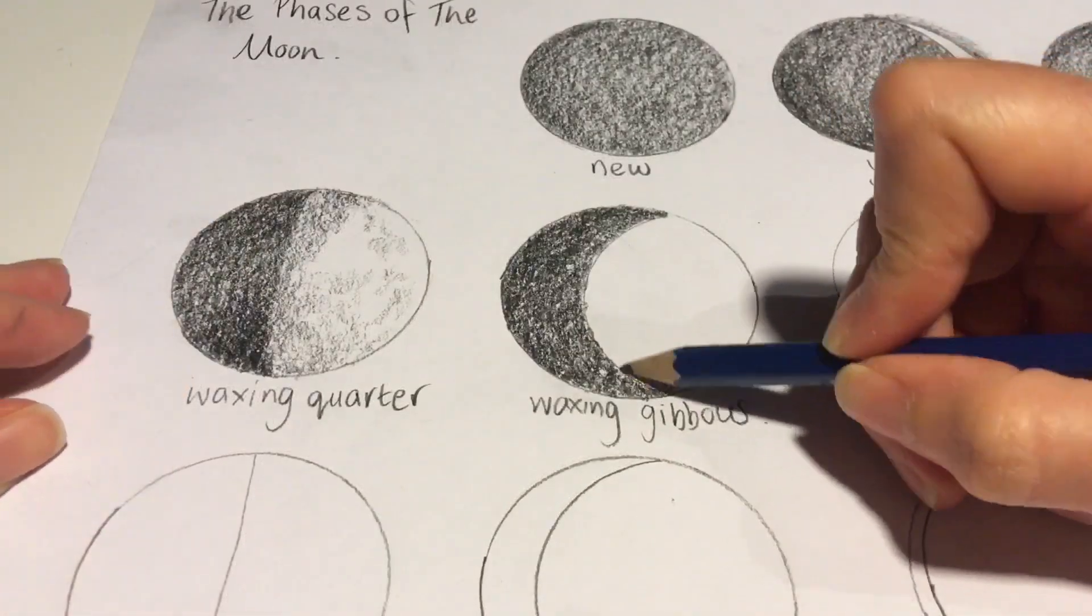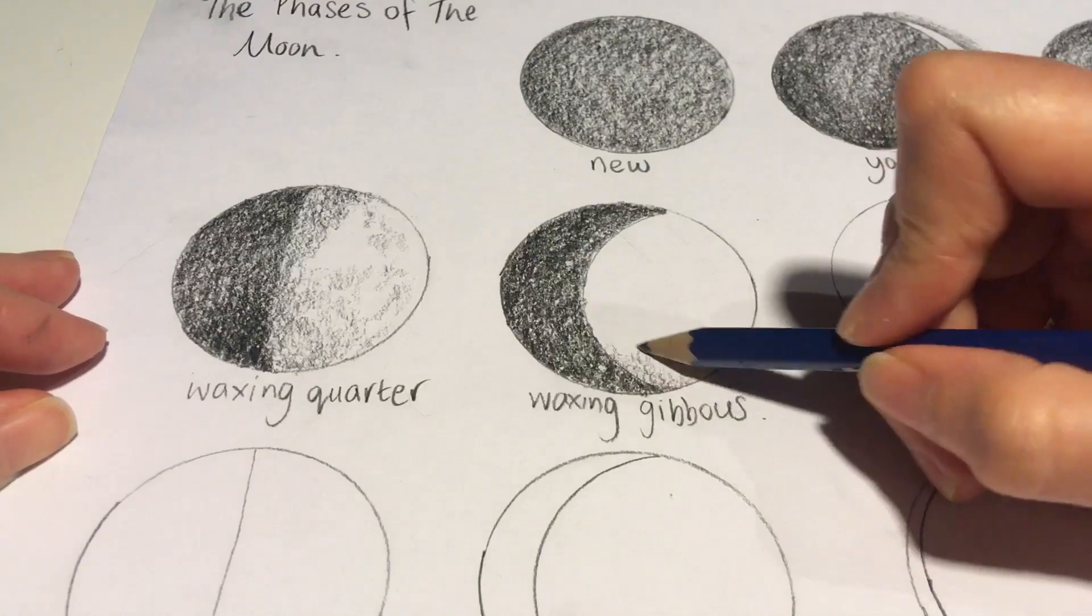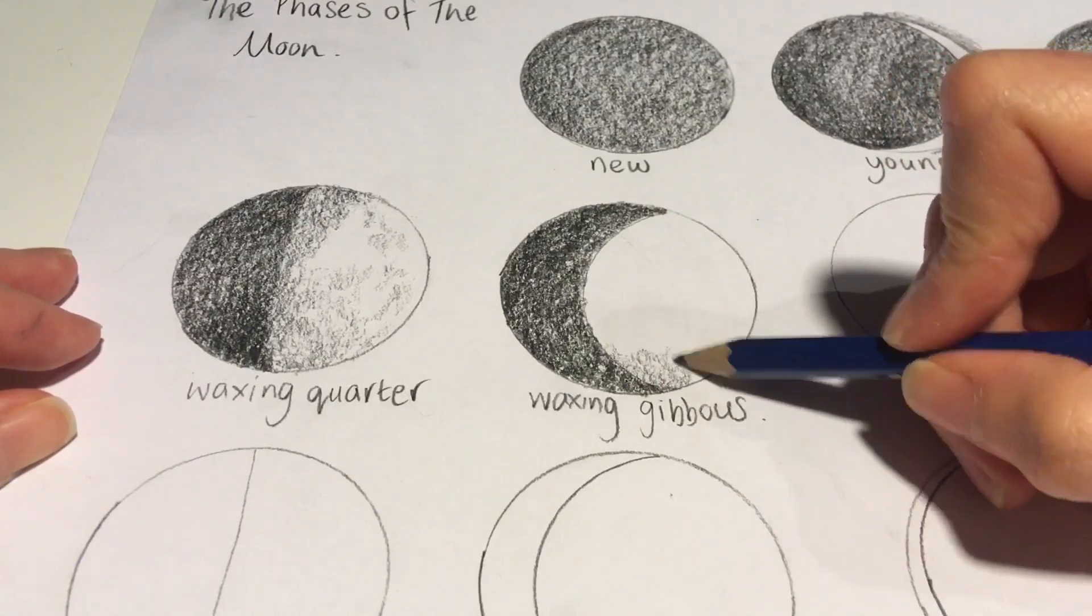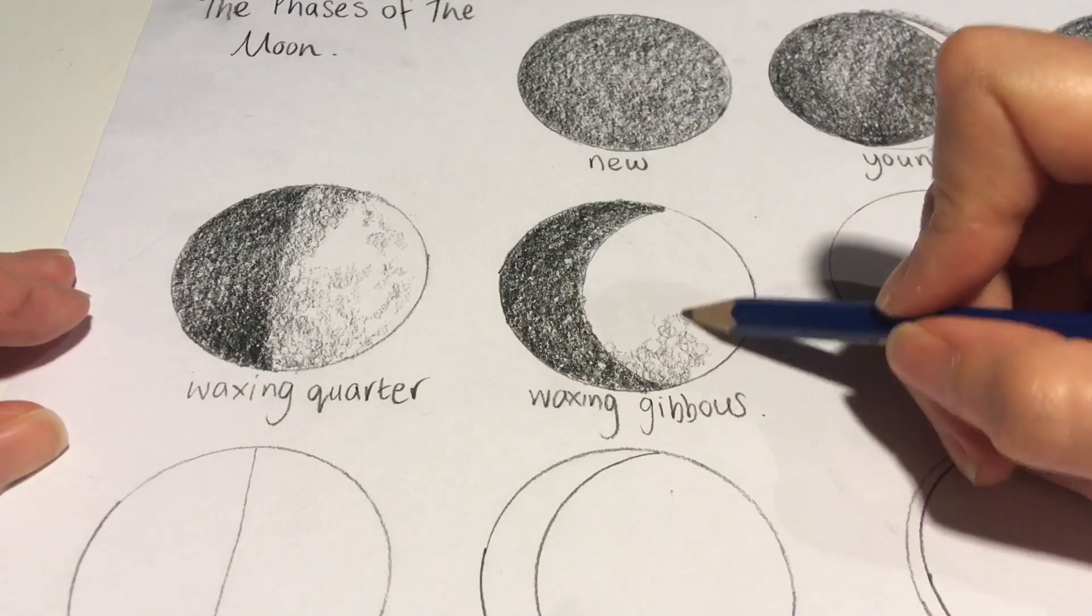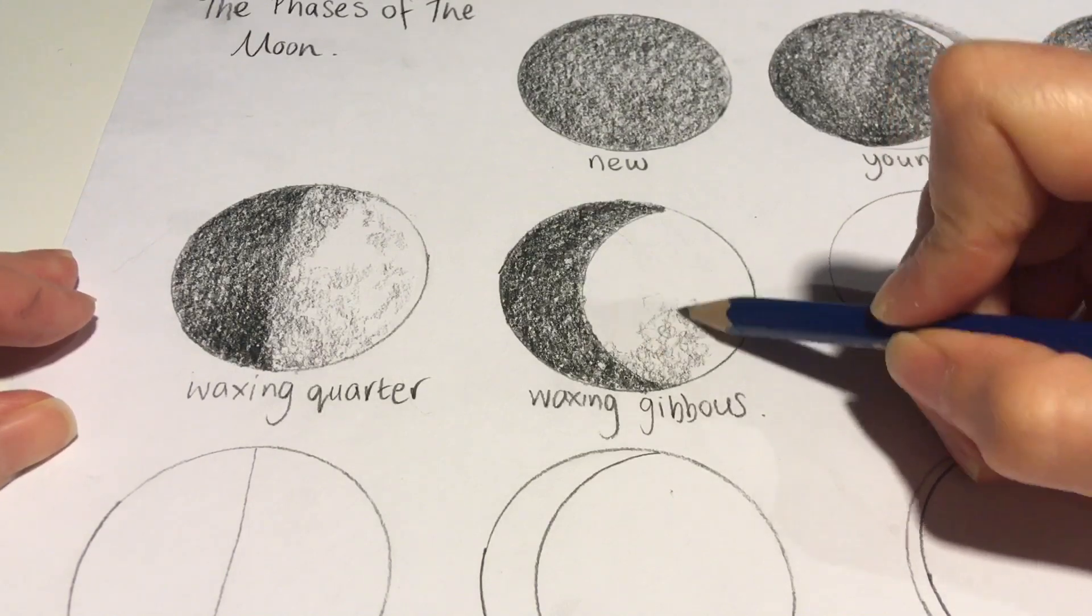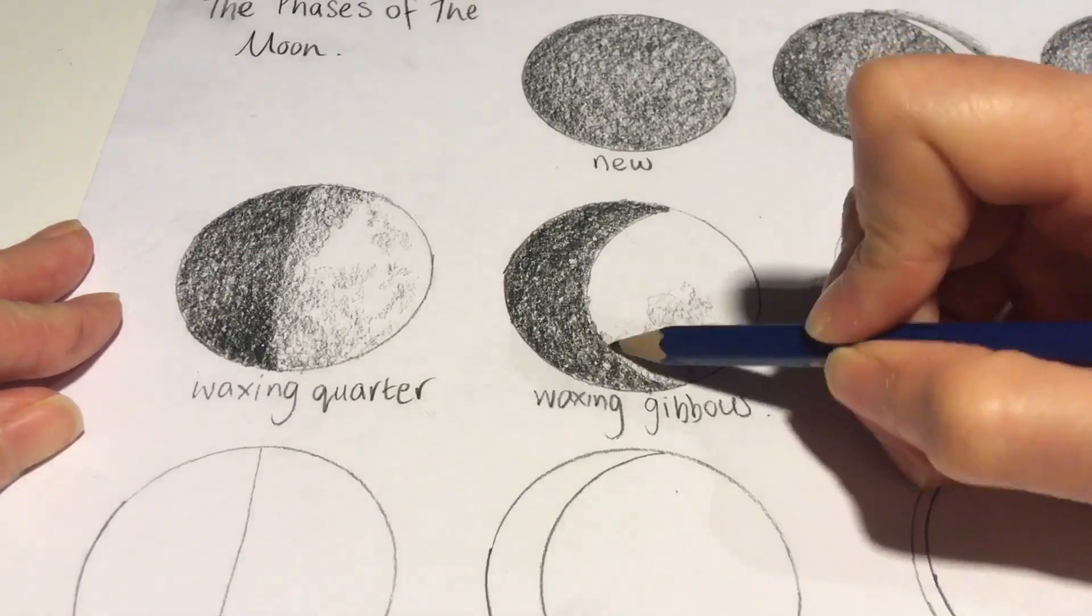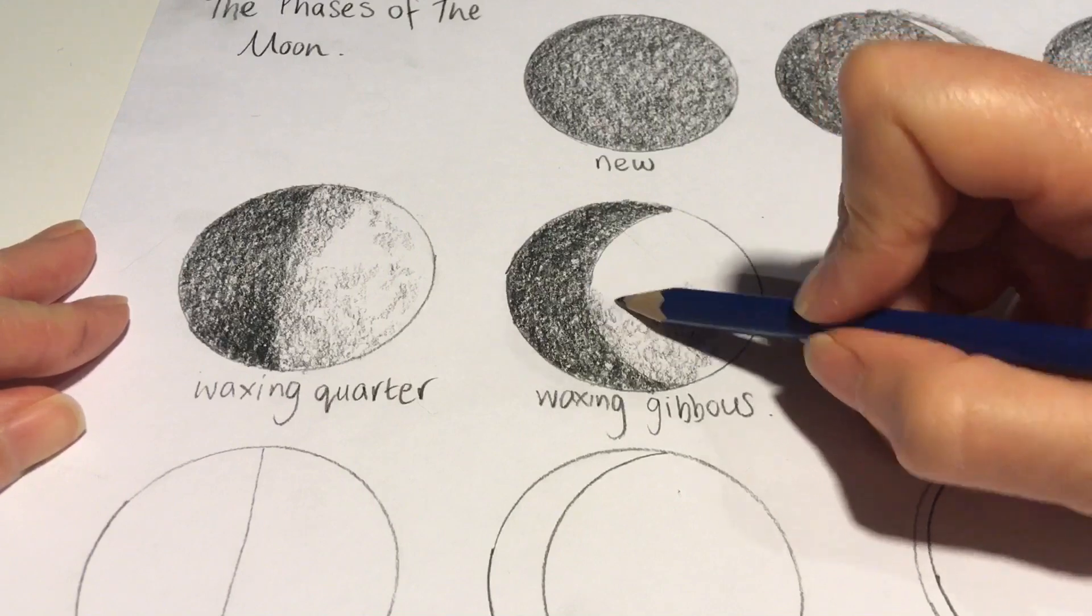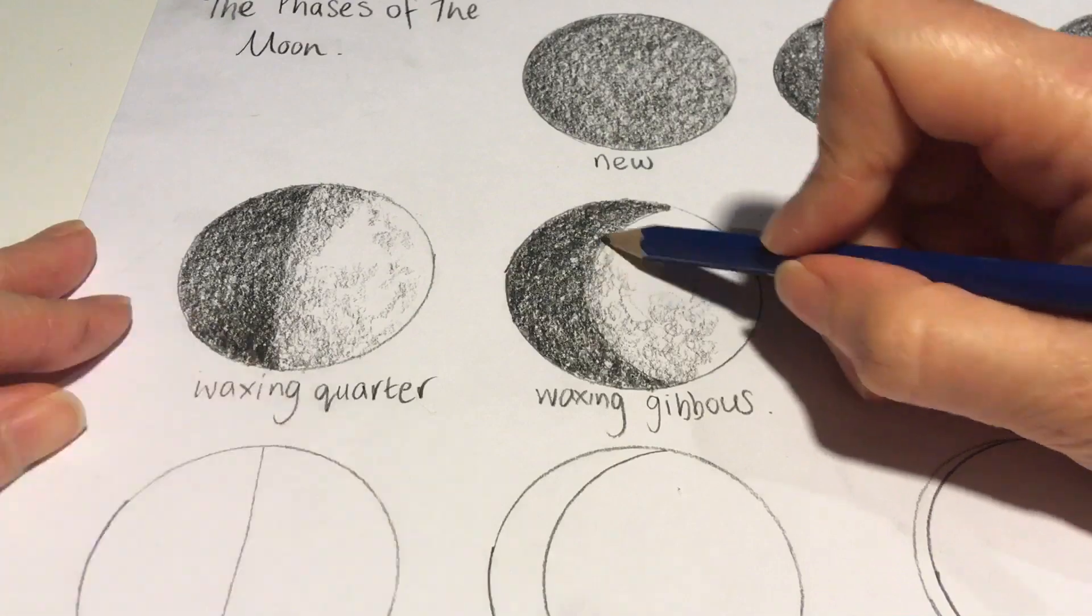Added the darkest areas of tone to the waxing gibbous, and now I'm looking carefully at the moon to see where there's also some more shading on the moon. Some more shadows, maybe it's craters, maybe it's just shadows around the edge of the moon which make it have a more spherical appearance, make it look more 3D. I'm just pressing on a lot lighter now with the pencil than I was before.